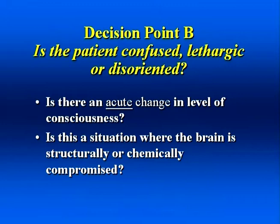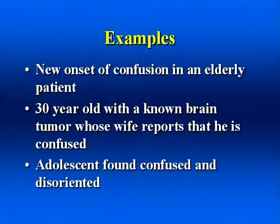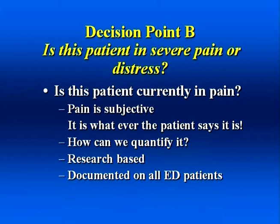Let's talk about the patient who is confused, lethargic, or disoriented. The triage nurse needs to identify the patient with an acute change in level of consciousness — is this a situation where the brain is structurally or chemically compromised? The triage nurse has to determine that the patient is physiologically stable and does not require immediate life-saving interventions. Examples of new onset confusion, lethargy, or disorientation include: new onset confusion in the elderly patient — an 86-year-old female who woke up confused; a 30-year-old with a known brain tumor whose wife reports he is confused today; or an adolescent found confused and disoriented.